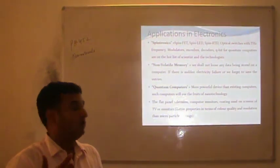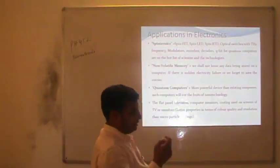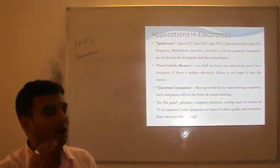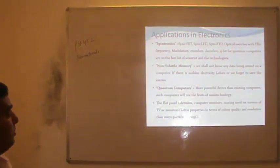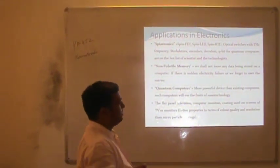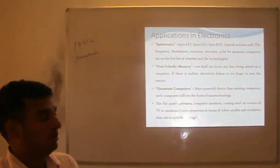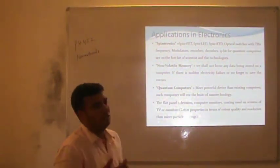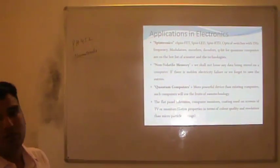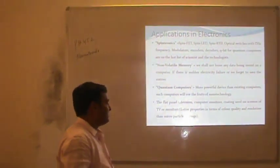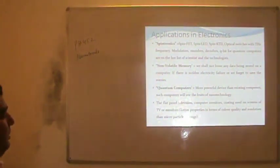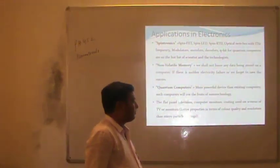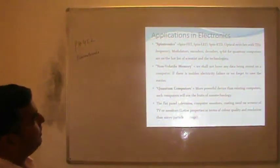We can have non-volatile memory devices for computers such that even with a sudden failure of electricity, our data is never lost — these are known as non-volatile memories. The last important one is the quantum computer, where scientists are looking for quantum computers whose speed is very fast, using qubits instead of digital signals 0 and 1. There is also the flat-panel television and computer monitor coating used on screens providing better properties in terms of color quality and resolution than microparticle coating. This covers the applications of nanomaterials in the field of electronics.